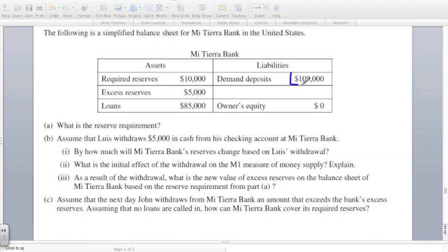What you can see is that you have demand deposits in the amount of $100,000. You've got the $10,000 that the bank must hold in required reserves. They've got an excess reserve of $5,000, and they've made loans of $85,000.